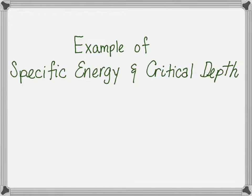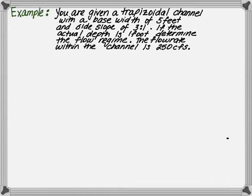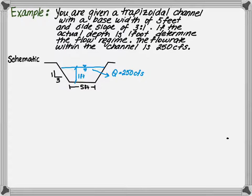This video covers examples on specific energy and critical depth. You are given a trapezoidal channel with a base width of 5 feet, side slopes of 3 to 1. If the actual depth is 1 foot and the flow rate is 250 CFS, determine the flow regime.